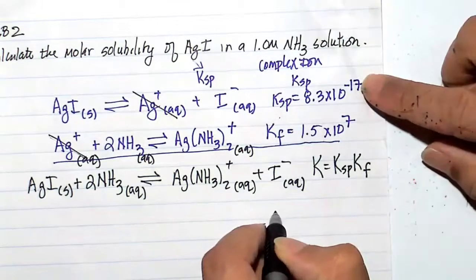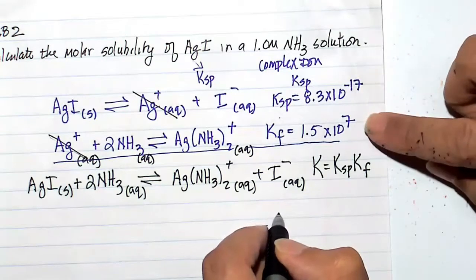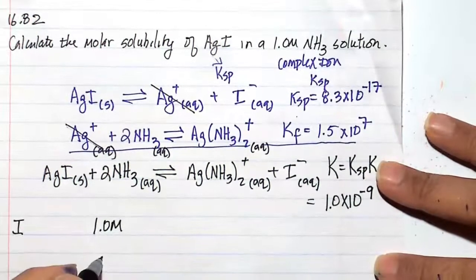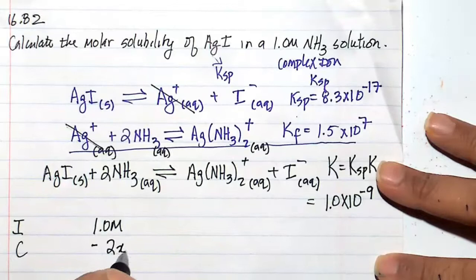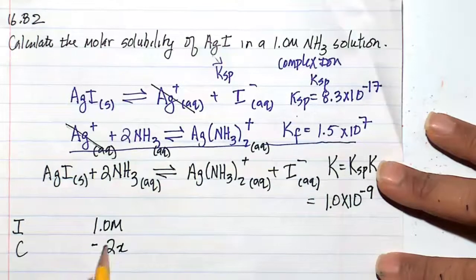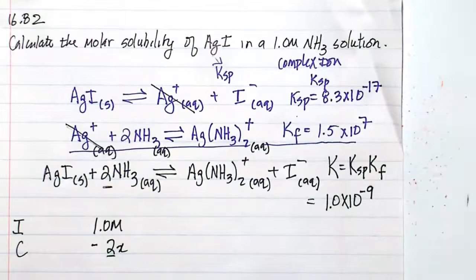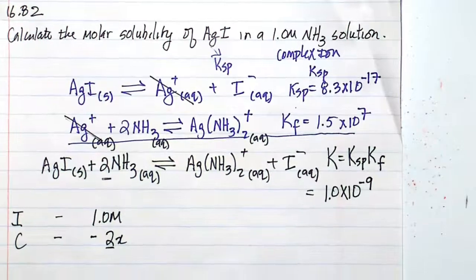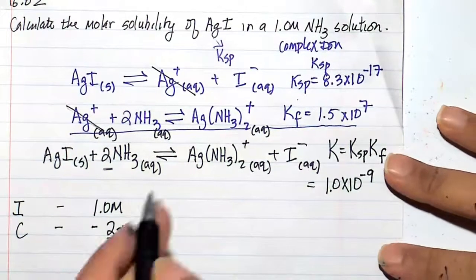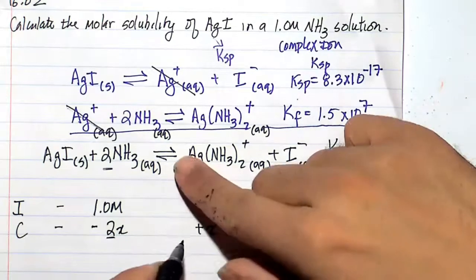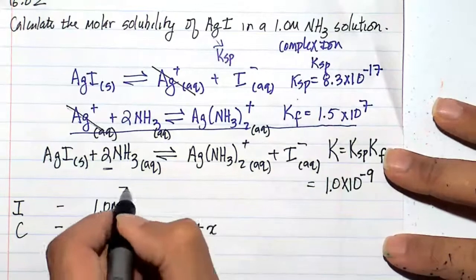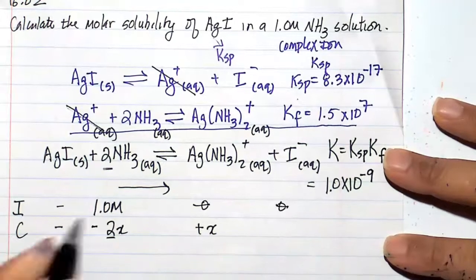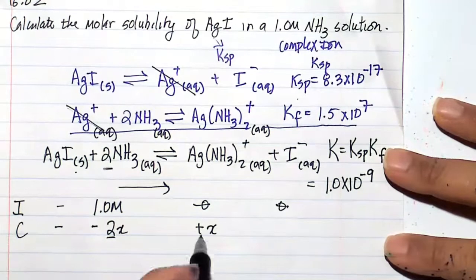Our new equilibrium constant, which is the multiplication of Ksp and Kf, is going to be 1.0 times 10 to the minus 9. So now we'll do our ICE table. We have one molar of NH3, and it will go minus 2x. We're going to see the reaction going to the right to get our complex ion concentration at equilibrium, which really tells us the solubility of silver ion in the NH3. The solids have no bearing on our equilibrium. This will be plus x for the complex ion and also plus x for the I⁻.